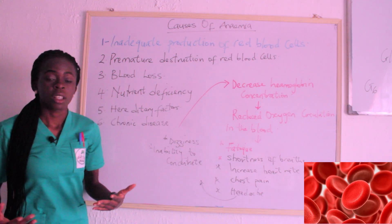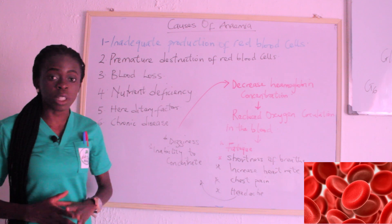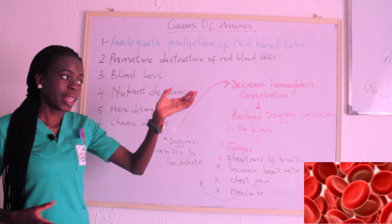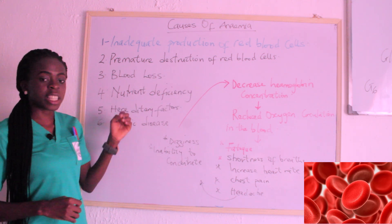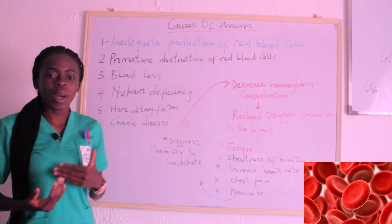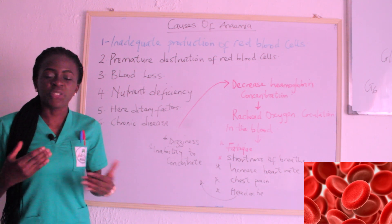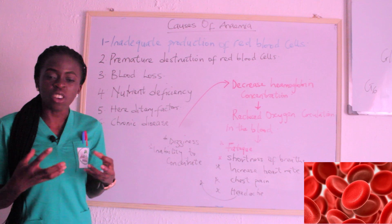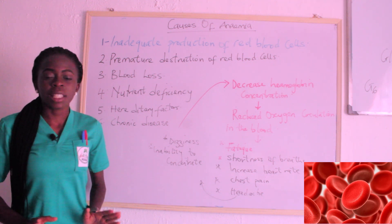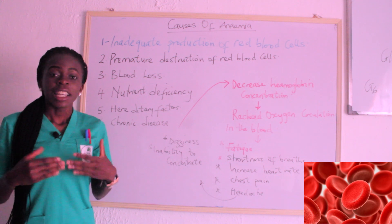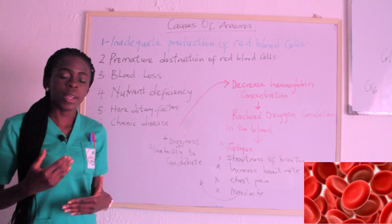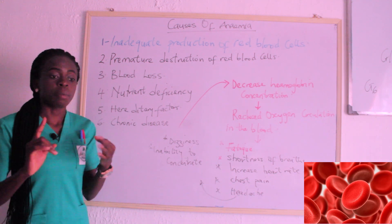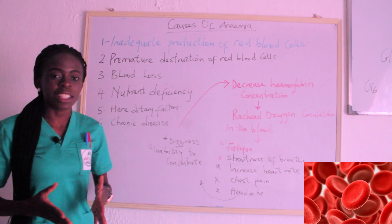The third cause is blood loss — hemorrhage or bleeding. When there is bleeding, a large amount of blood may leave the body and result in anemia. The fourth is nutrient deficiency: the individual is not taking appropriate nutrients such as vitamin B12, folic acid, or iron. Remember from our erythropoiesis class, these are the factors needed for erythropoiesis to take place, and when they are absent, anemia is likely to occur.